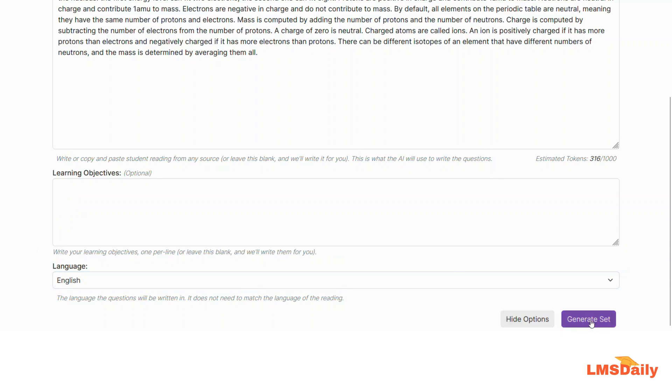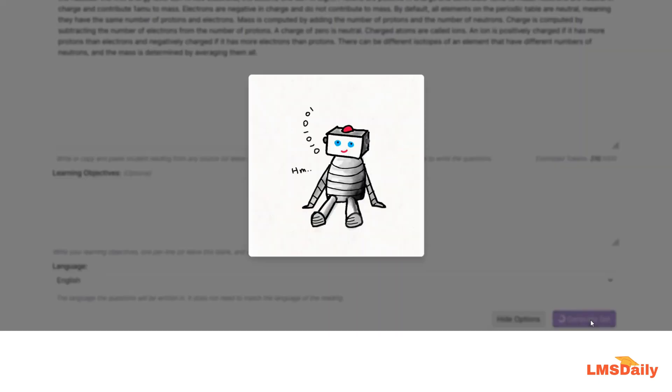Once you're done with these settings, click the 'Generate Set' button at the bottom. The app will take approximately 30 to 40 seconds to create the questions for you. You can then save and export them to use in different apps like Quizizz, Blukat, and other platforms.